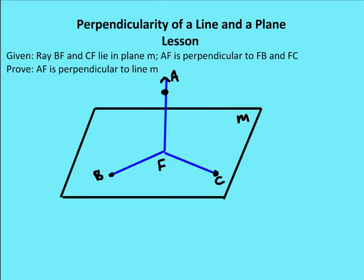I challenge you: given that ray BF and CF lie in plane M, and AF is perpendicular to FB and FC, prove that AF is perpendicular to plane M. You can check back on the videos later to see if you have the correct solution to this particular problem.